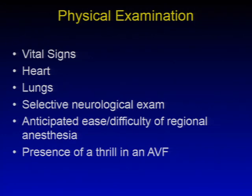Also consider the anticipated ease or difficulty of regional anesthesia, taking into account the patient's body habitus, infections in the area of the planned block, and ease of positioning — such as a patient with a traumatic fracture. Be sure not to overlook patients presenting with an arteriovenous fistula: palpate and document a thrill within the AV fistula, and make arrangements for proper padding to avoid injuring it during the case.